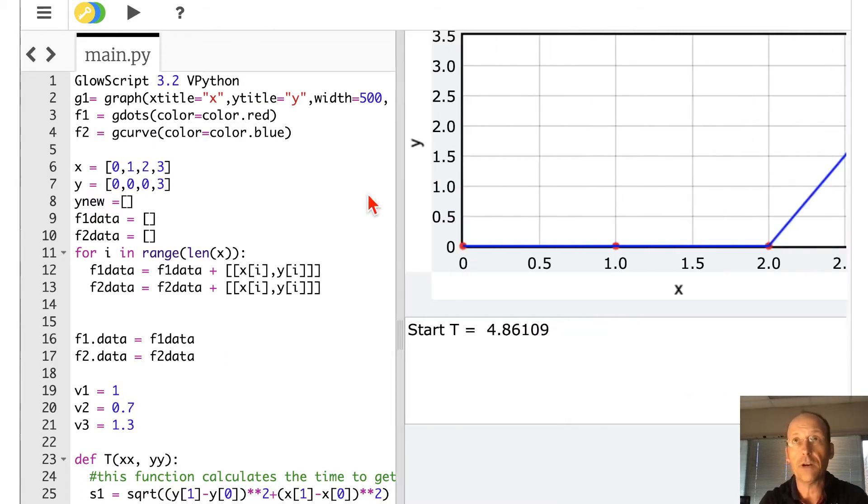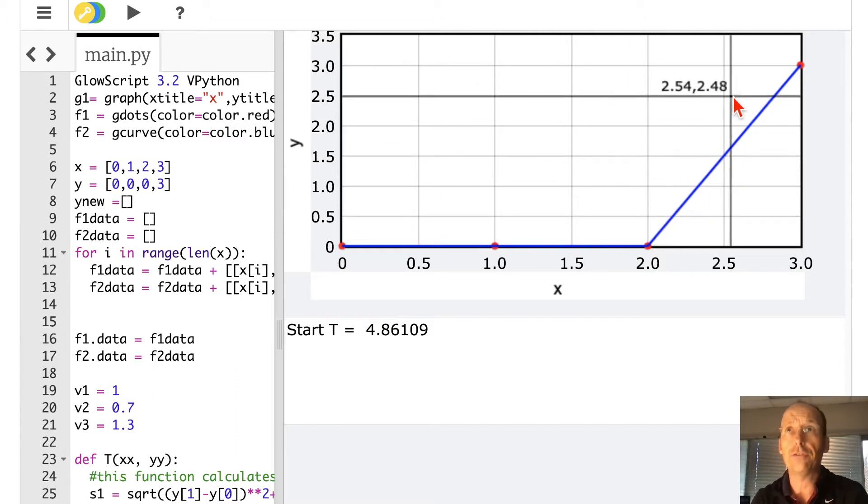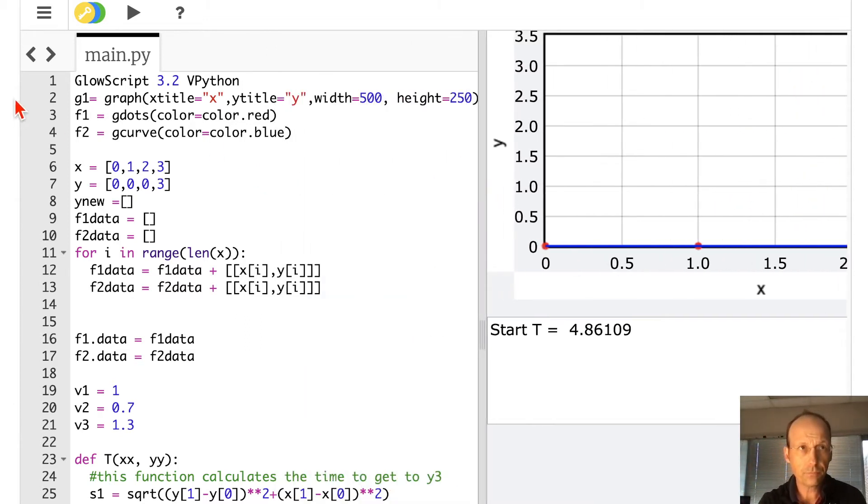So that it takes 4.86 seconds to get across. And that seems to make sense, right? I'm going from here to there, different speeds, about one meter per second, a little bit, but I also have to go up. So the total distance that this seems realistic. So I'm fine with that.